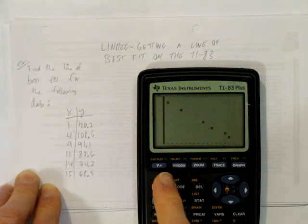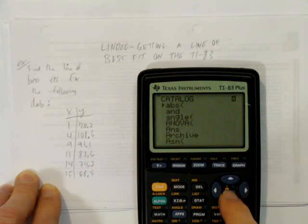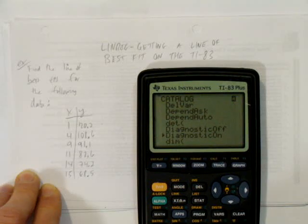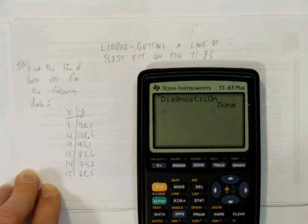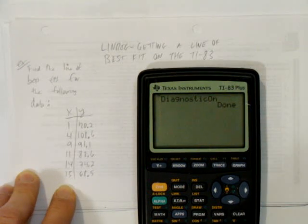The next thing I want to do is hit second zero. This is optional, but hitting second then the zero button — see on top of zero it says catalog — this allows us to do a little bit extra. When we scroll down, we scroll all the way down until you get to diagnostic on. When you get there, hit enter. It appears on the screen and hit enter again. What that's going to do is give us what's called the correlation coefficient or the R value, which is going to tell us how well our data matches the line we create. So we've turned diagnostic on.